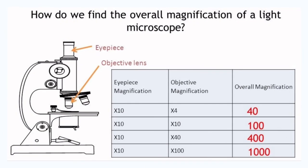The total magnification with which you are viewing the object can be calculated by multiplying the magnification of the eyepiece lens by the magnification of the objective lens you are using. For example,